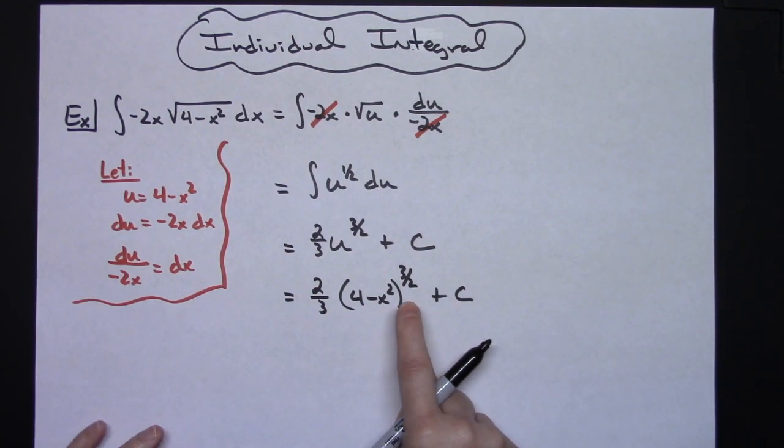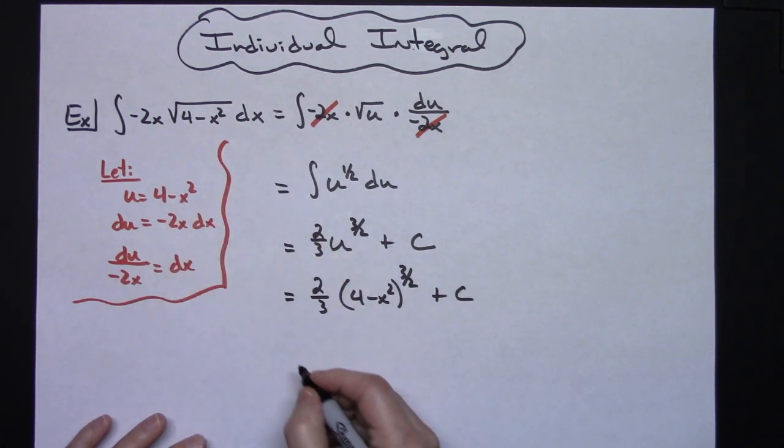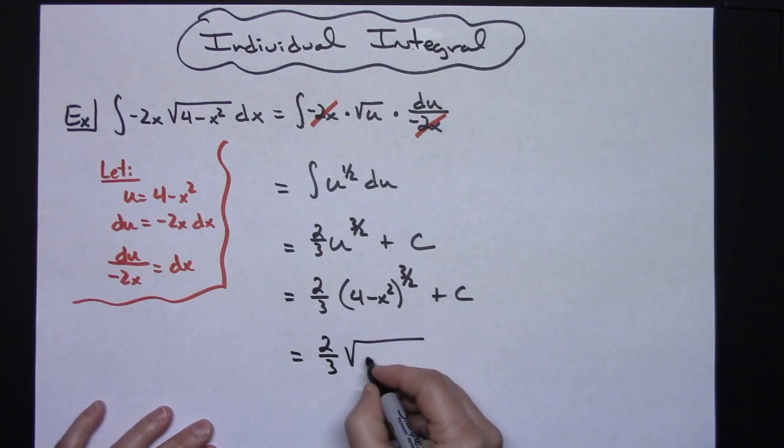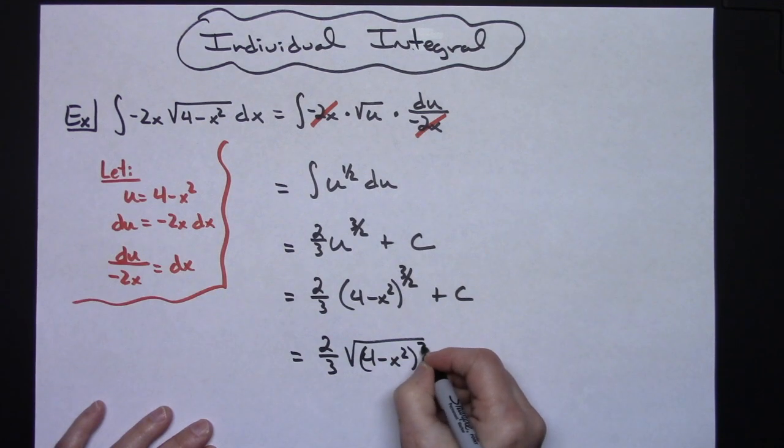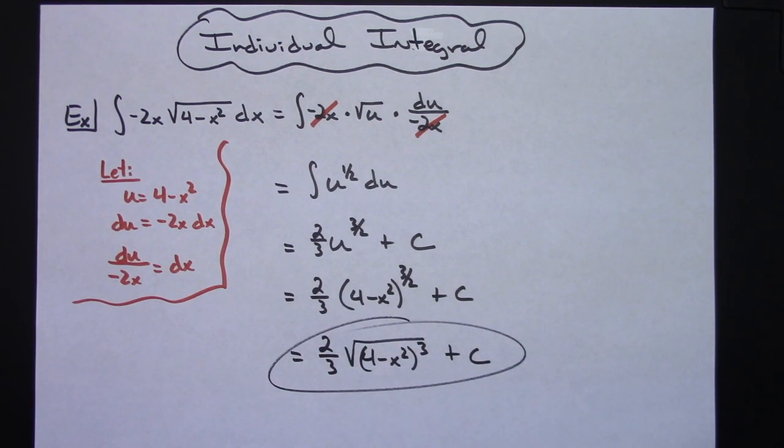And then most the time you're going to want to probably turn that back into a radical since the original integral was in a radical form. So I would probably write it as 2 thirds square root of 4 minus x squared all raised to the third power.